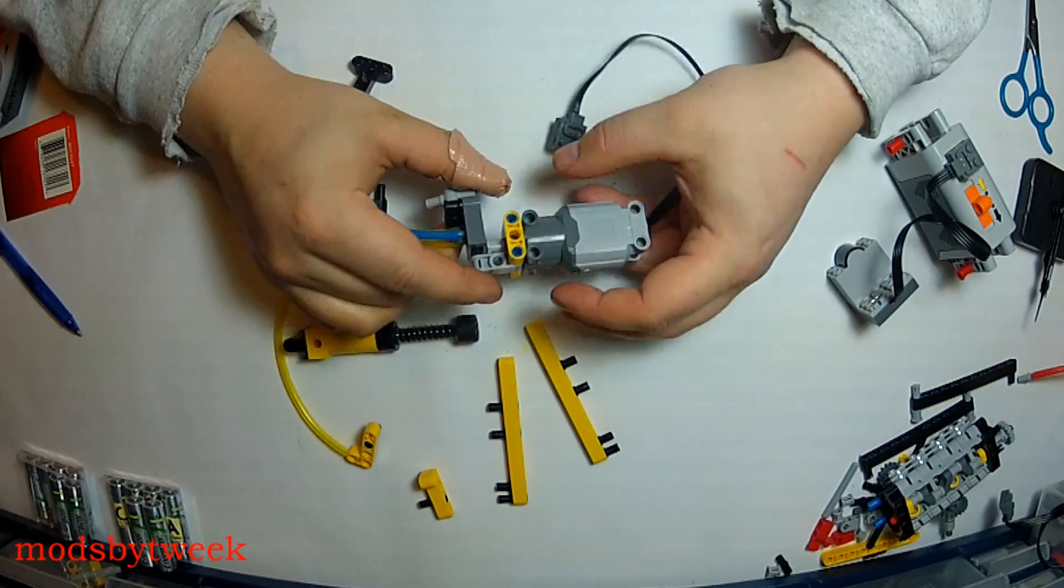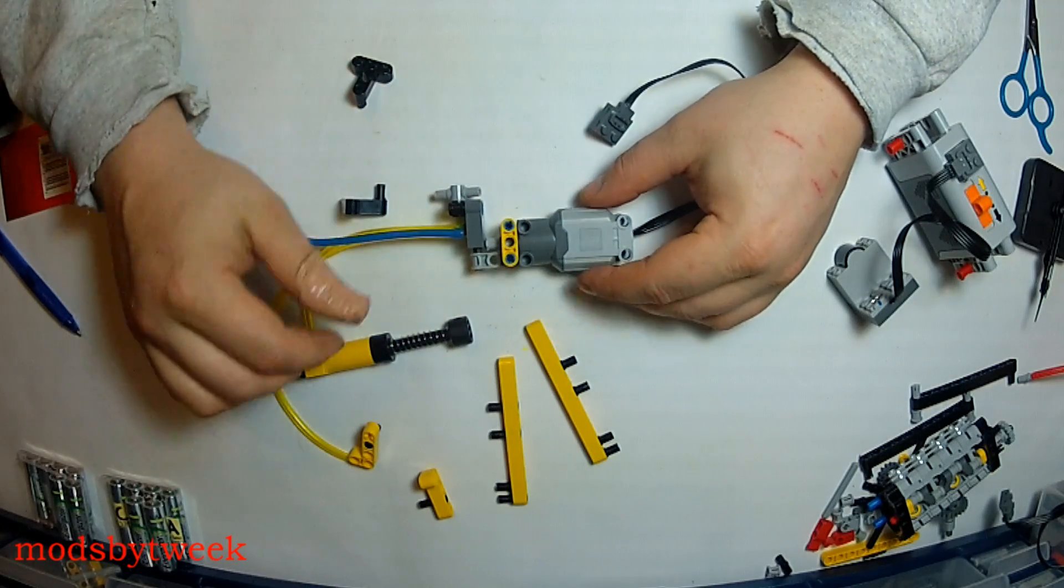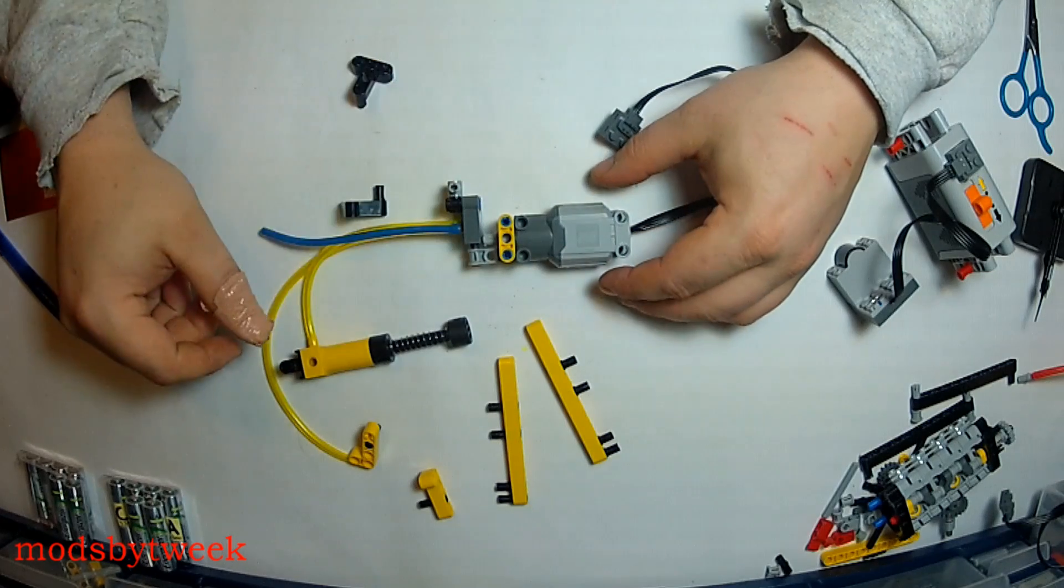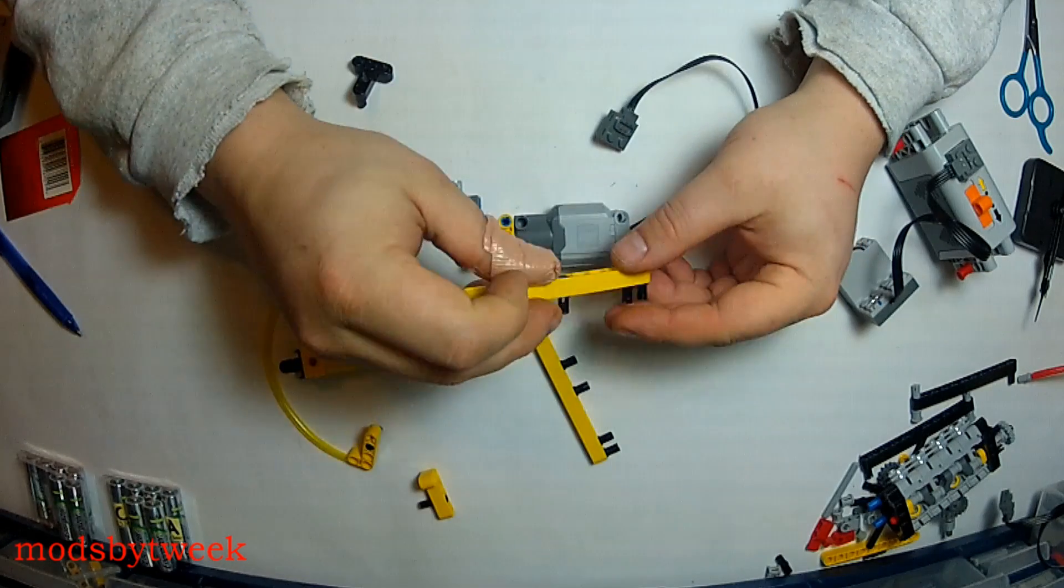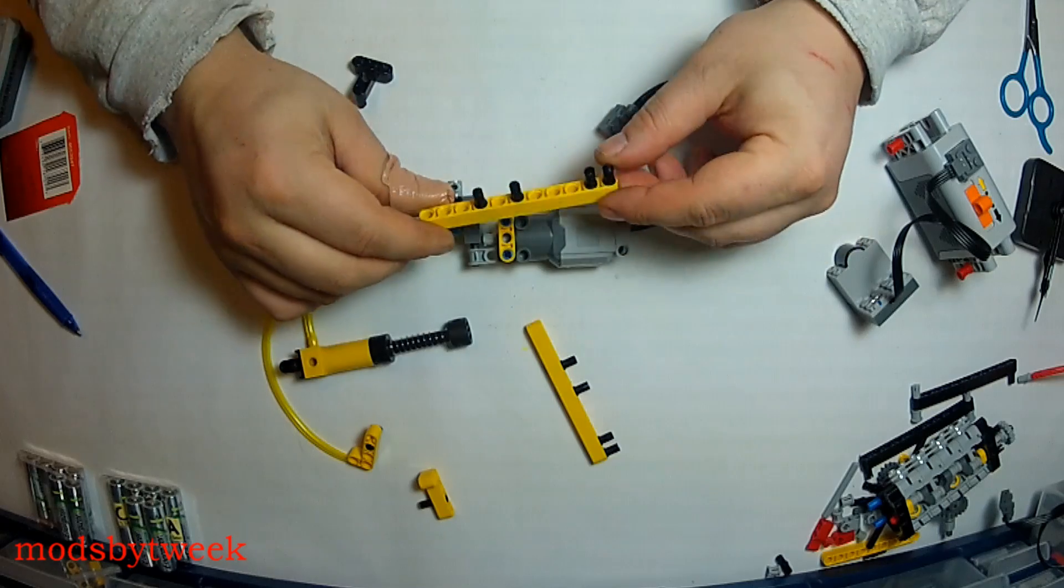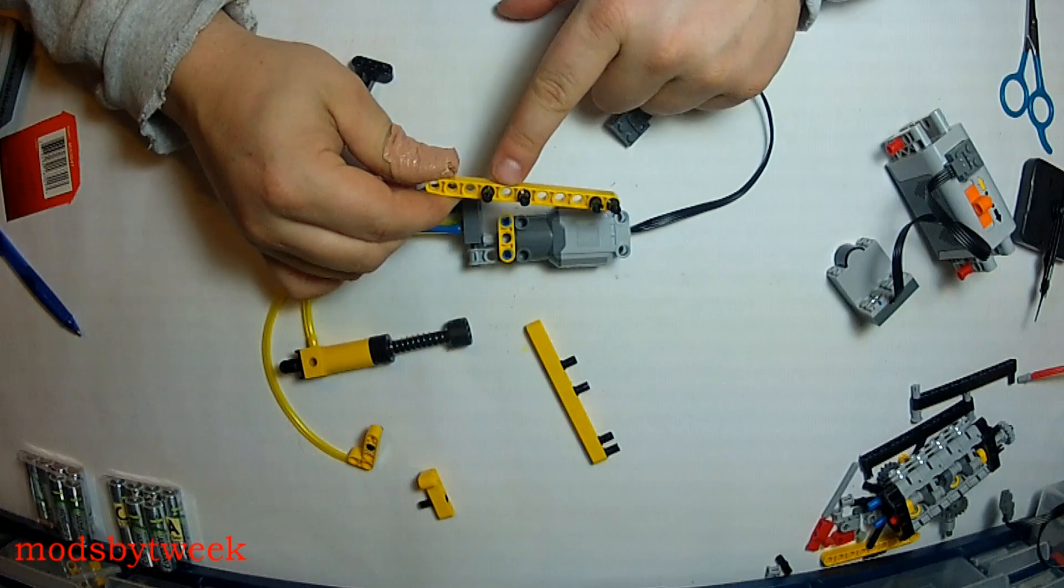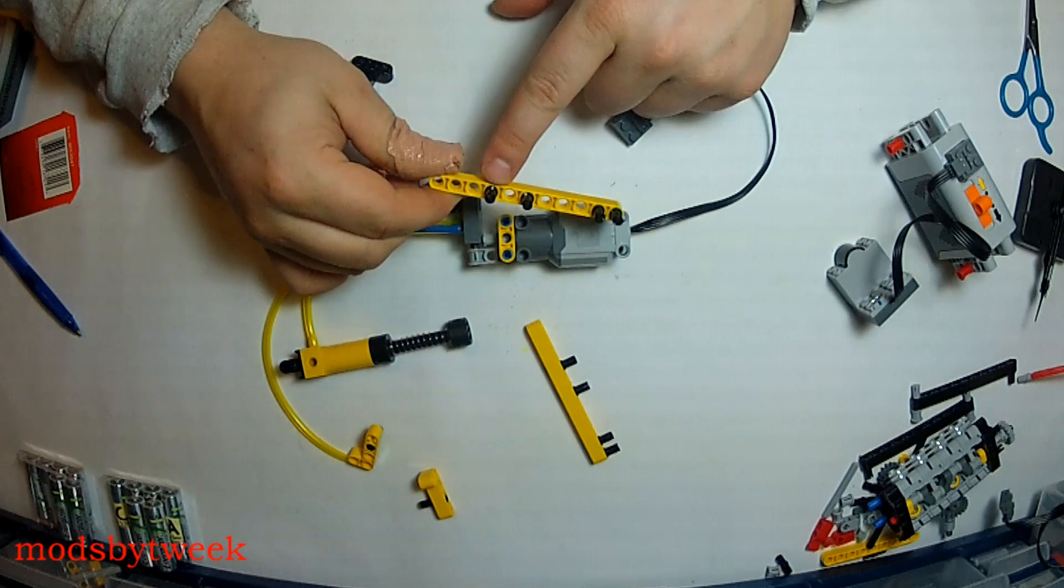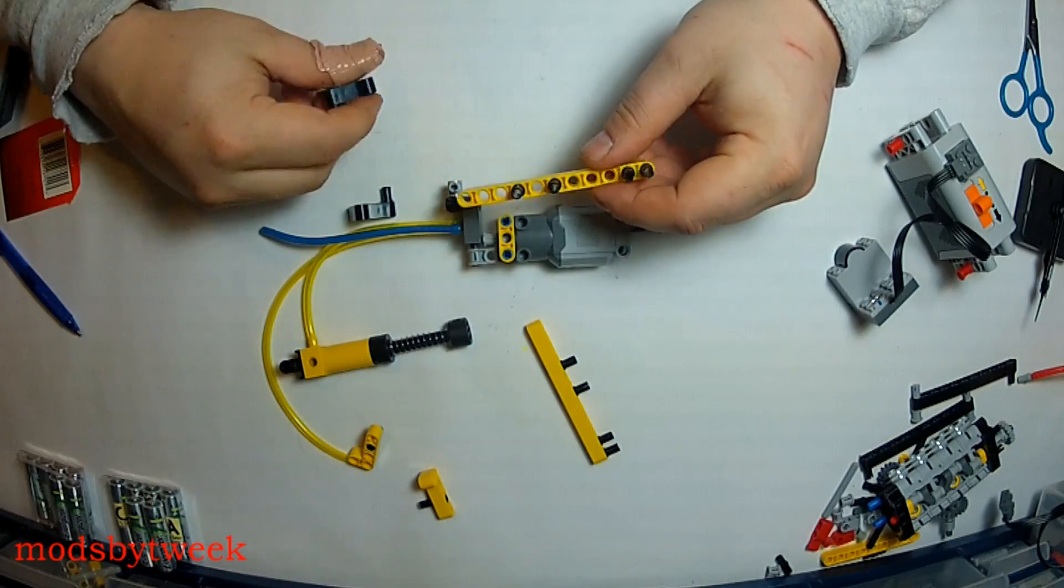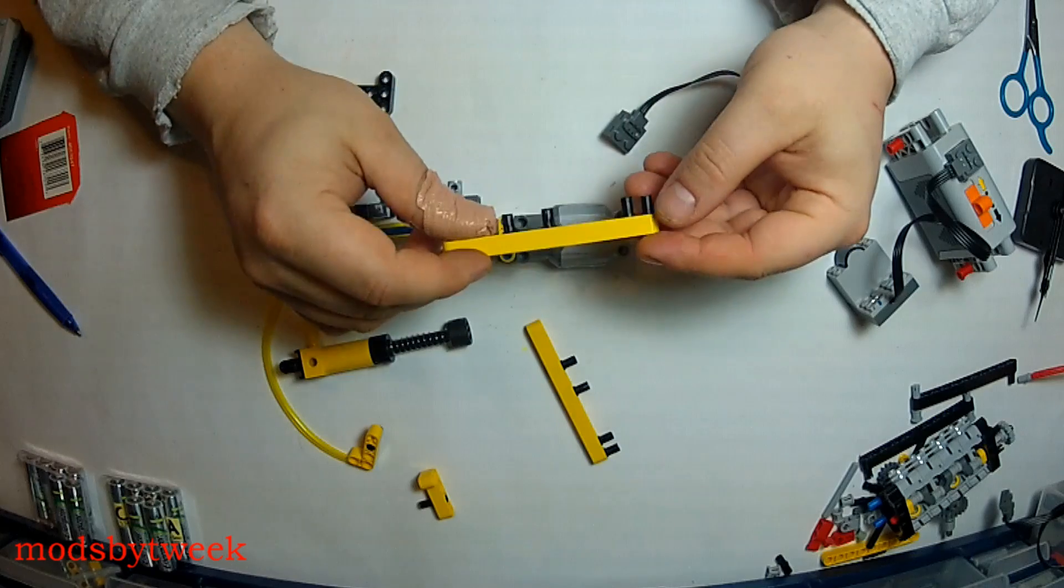You want to rotate that one off. Now you want to take one of these and you want to put two black ones, three spaces, one black, one space, black, and then you have three spaces on the end.